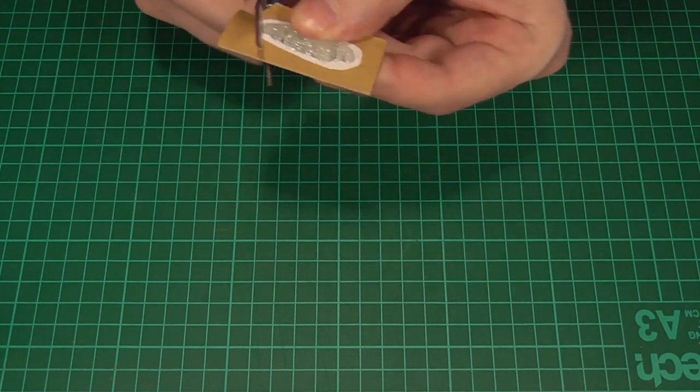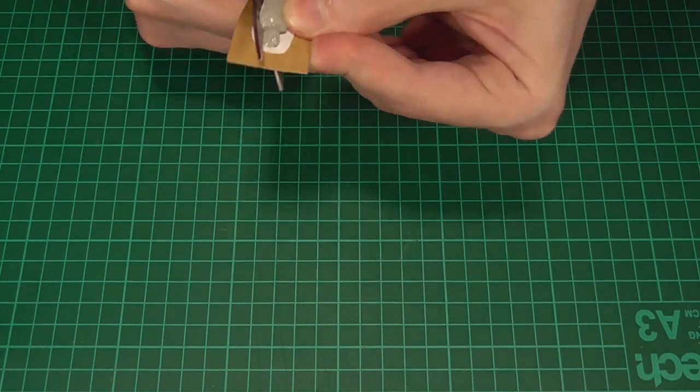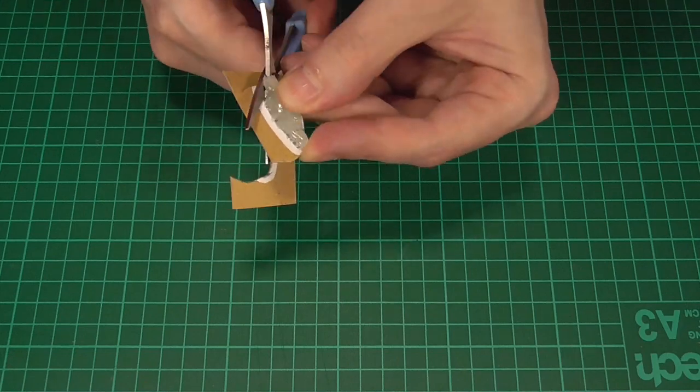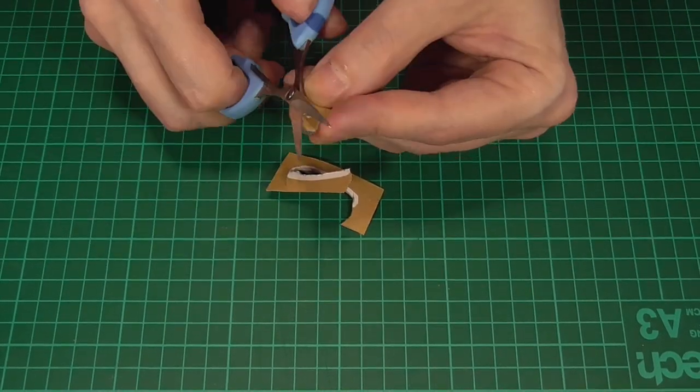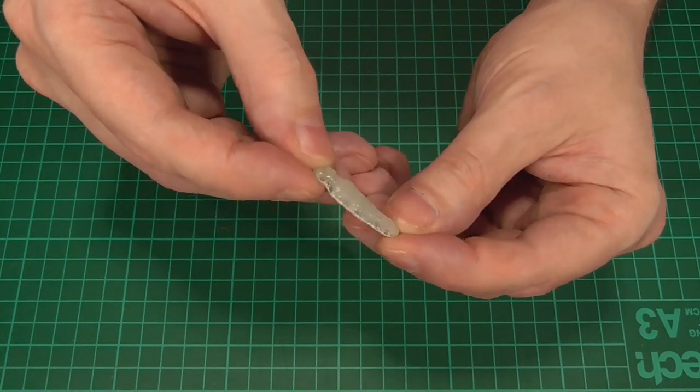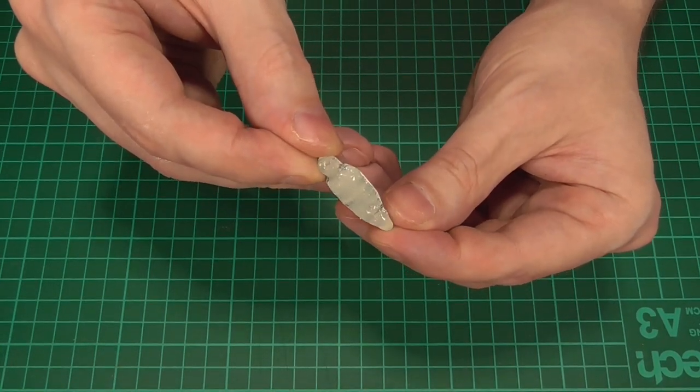Okay, then all we'll need to do is cut that out, just using a sharp pair of scissors again, and trying to cut it as close to the glue as possible. And that should result in something like this. So, a little hot glue jelly baby almost.